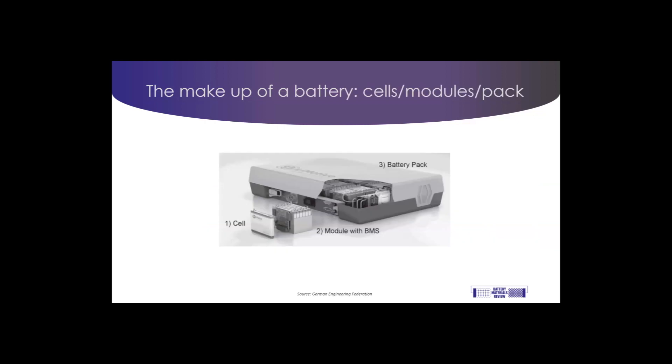Because of the amount of cells needed to make an electric vehicle or a stationary storage product, cells are often grouped together in what we call modules. Modules are then grouped together to make a battery. The example on this slide shows a battery pack made of prismatic cells.